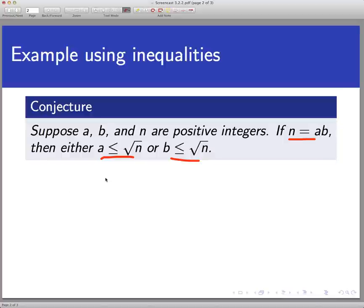So the main challenge here is to form the contrapositive of this statement. Let me get rid of the markings I have here and just isolate the hypothesis and conclusion. Here's the hypothesis that n is equal to ab. I'll call that p.